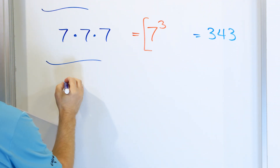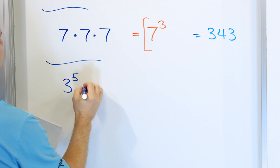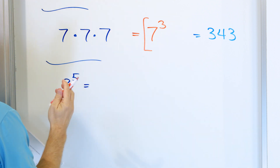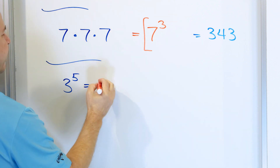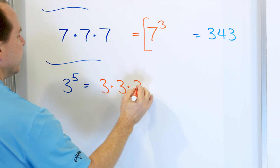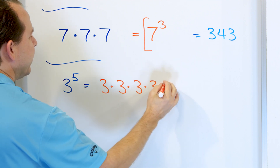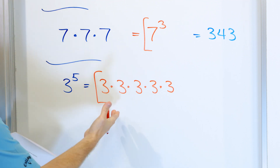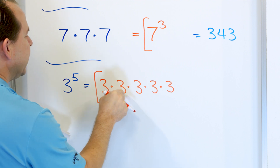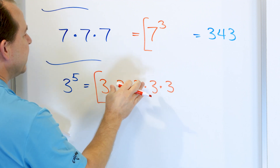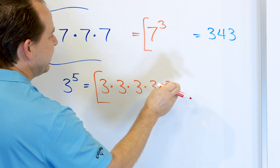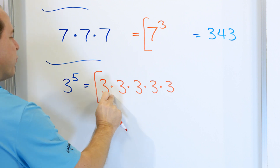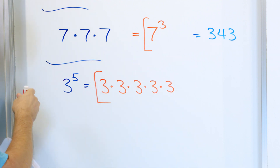Let's take three to the power of five and write this as a product of factors. All you have to do is expand the multiplication. The base is three and we're going to have five of them: number one, two, three, four, and five. This is a product of factors equal to three to the power of five. If you want to know what it equals, three times three is nine, nine times three is 27, and you keep going — it's going to be a very large number, but we don't focus on that here.